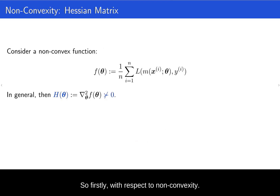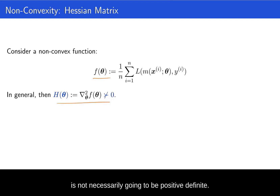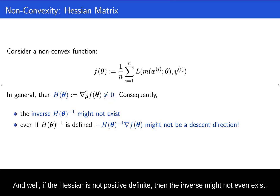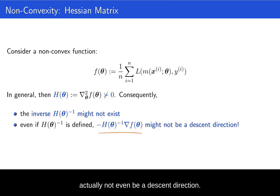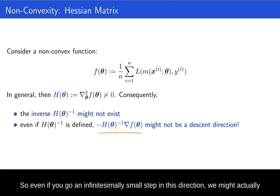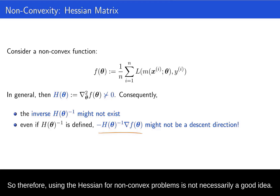With respect to non-convexity: if we have a non-convex function f of theta, then the Hessian is not necessarily going to be positive definite. And if the Hessian is not positive definite, then the inverse might not even exist. And even if the inverse is defined, this preconditioned gradient step might still not even be a descent direction — even if you go an infinitesimally small step in this direction, we might actually increase our loss function rather than reducing it. So using the Hessian for non-convex problems is not necessarily a good idea.